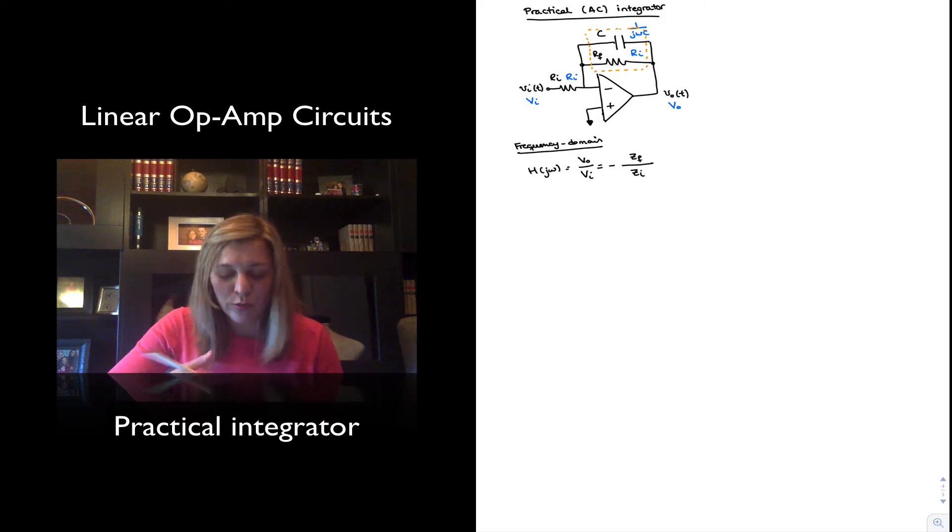Feedback impedance over input impedance. And so the feedback impedance will be the parallel combination of RF and 1 over j omega C, and the input impedance will simply be Ri.